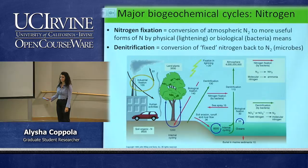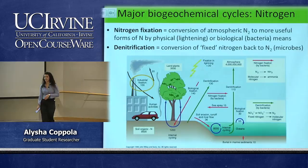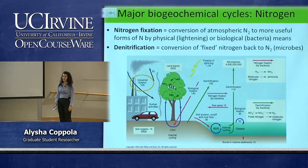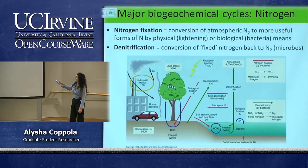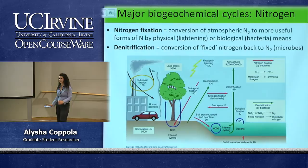Nitrogen fixation occurs in two main ways. Lightning accounts for about 10% of all fixed nitrogen on earth. The other 90% comes from microbes in the soil converting N₂ into usable nitrate. That fixed nitrogen is used in the formation of land plants. Fixed nitrogen also washes out to the ocean and is used by marine ecosystems — helping marine organisms and phytoplankton grow.